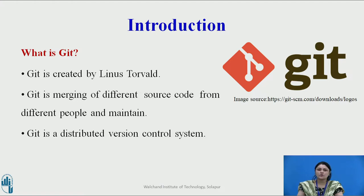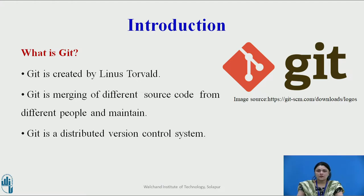Let us assume a situation where 5 people are working on a project and you want to manage so many things. Is it simple? No. You need to maintain many versions and merge all those modules. Git works on the basic idea of a distributed version control system, based on SCM — source code management — where you manage your source code.